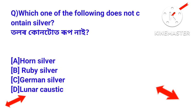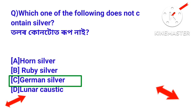Question: Which one of the following does not contain silver? Answer: German silver — German silver does not actually contain silver despite its name.